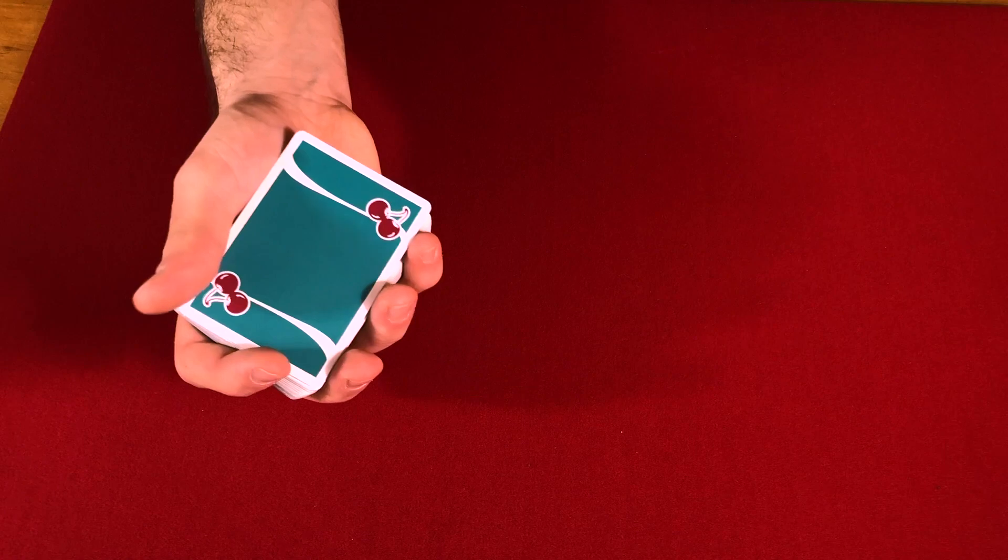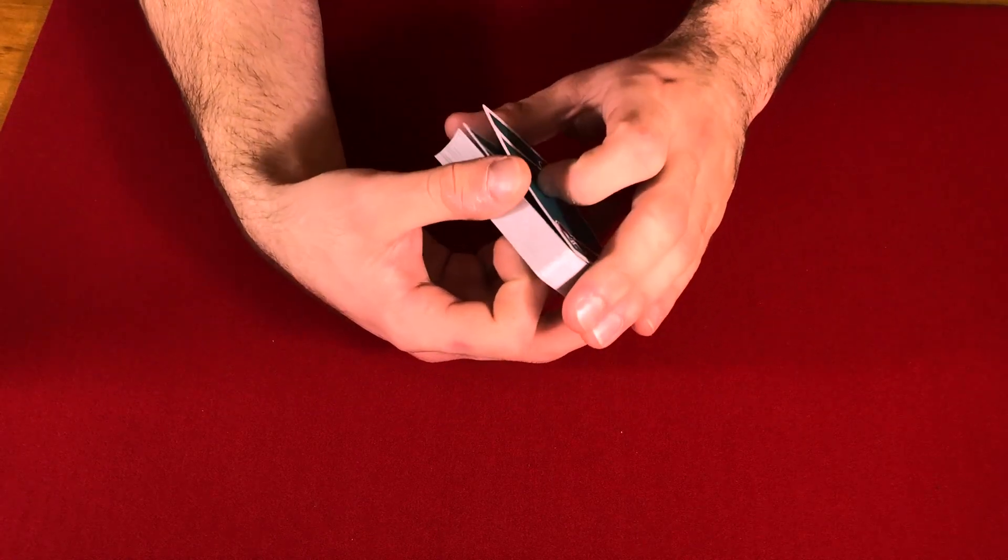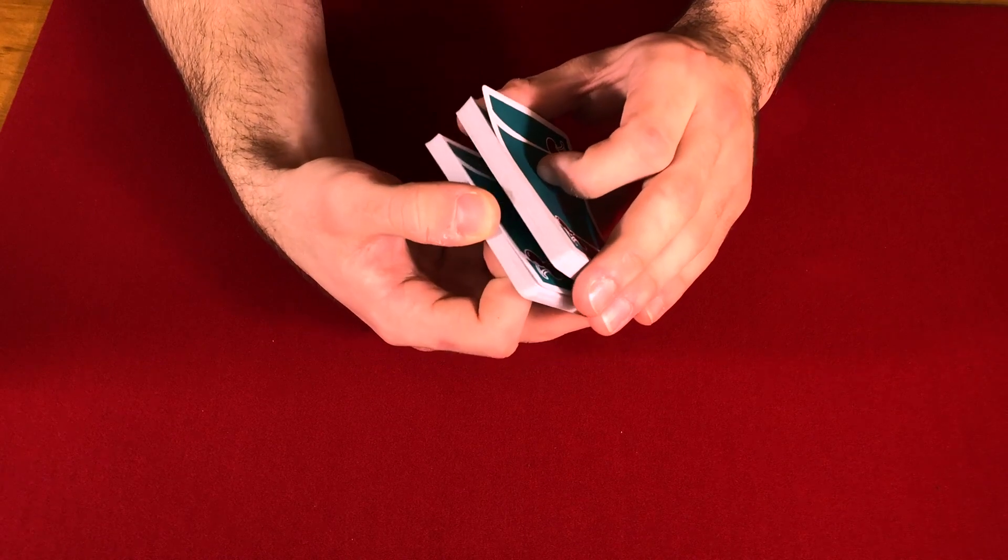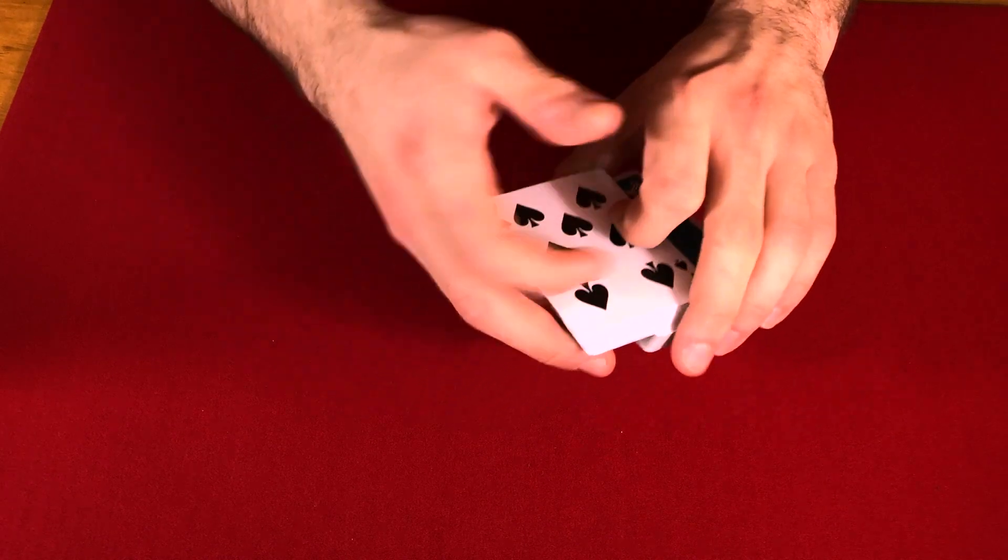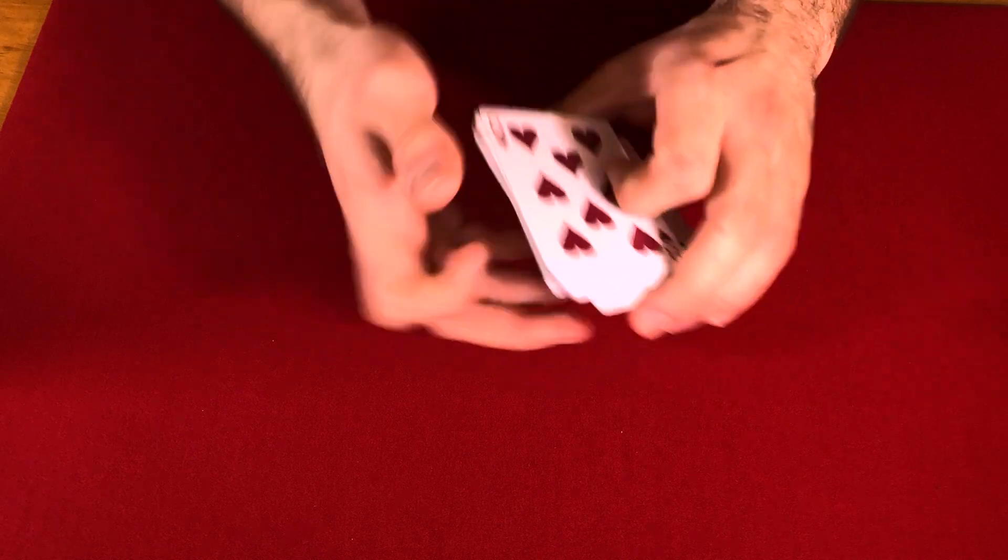We're going to push over and get a break on the card. Now what we're going to do is we're going to double undercut the cards in a certain way. So we're going to take some of the cards, put them on top and turn them face up, take the rest of the cards, put them on the top face up.